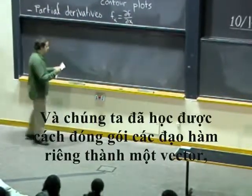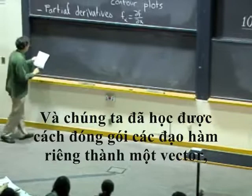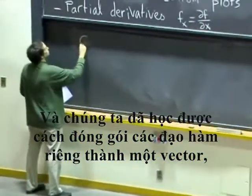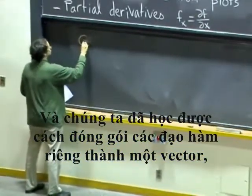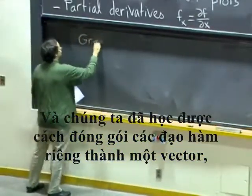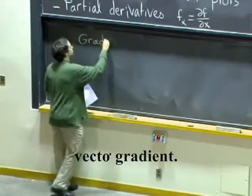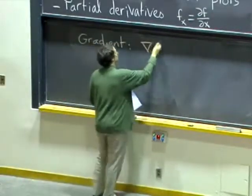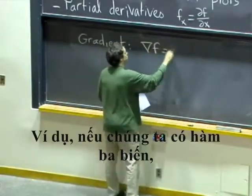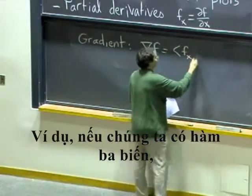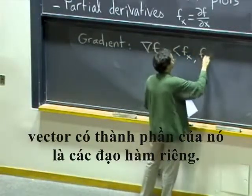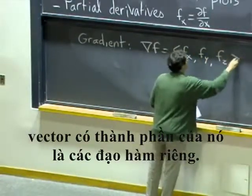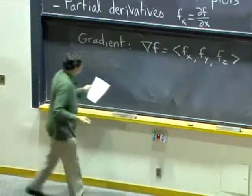We've learned how to package partial derivatives into a vector — the gradient vector. For example, if we have a function of three variables, that's just the vector with components of the partial derivatives.